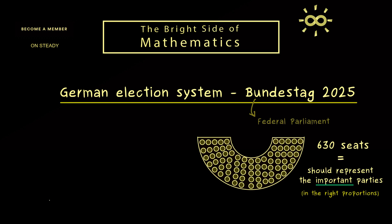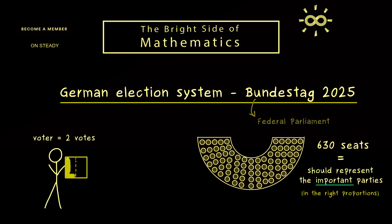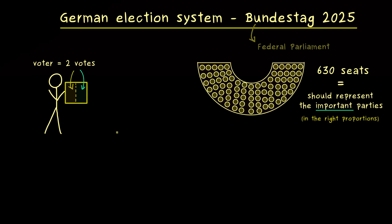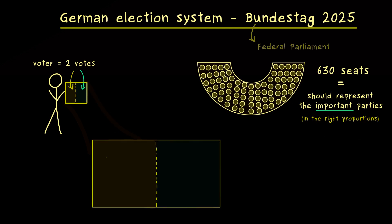Let's first look at how this voting process basically works. Every voter has a ballot paper, and the German election system says that every voter has exactly two votes. On the ballot paper there is a first vote on the left-hand side and a second vote on the right-hand side. Indeed, we have a mixed system for the whole voting process. The ballot paper is divided into two parts where we have the first vote on the left and the second vote on the right.